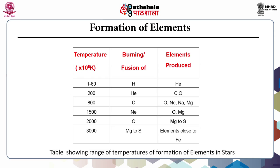At 1500 × 10⁶ Kelvin, burning of oxygen produces elements from magnesium to sulfur. When temperature is in the range of 3000 × 10⁶ Kelvin, burning of magnesium to sulfur takes place and other elements close to iron are produced.